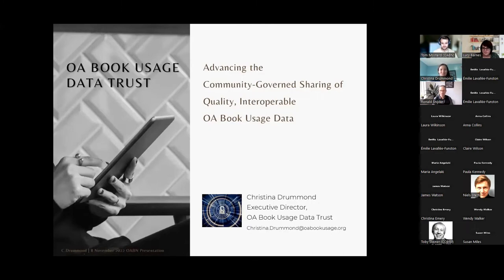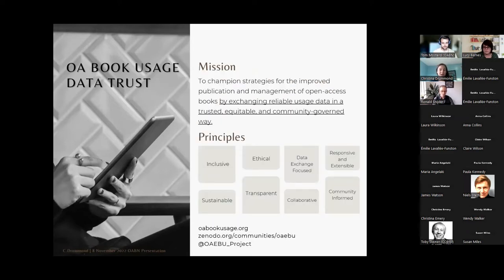Thank you so much, Lucy, and thanks to all of you at the Open Access Books Network for your interest in solving these issues we have around OA book usage data. I'm the executive director for this OA book usage data trust effort. I thought it would be useful to start with a description of the journey we've been on. The mission we're focused on together is the exchange of reliable usage data in a trusted, equitable, and community-governed way. We came together as a community to recognize that the principles of open scholarly infrastructure are very relevant to what we're doing, and we want to adopt that in this work going forward.